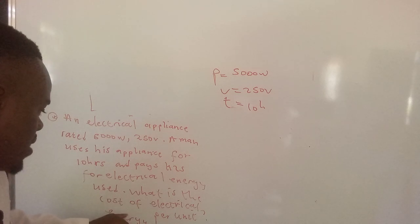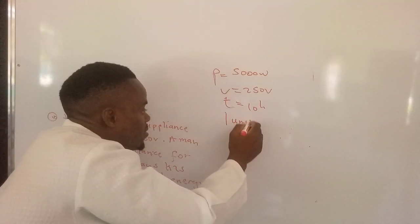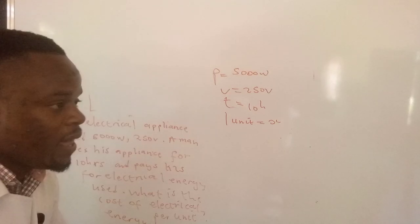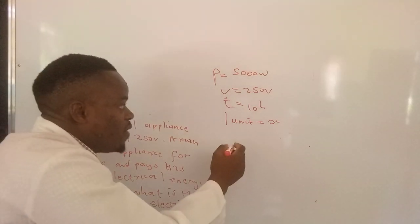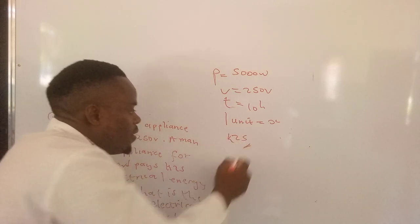What is the cost of electrical energy? So one unit is equal to, we don't know. But for the entire energy used by the man, he has paid 25 kwacha.